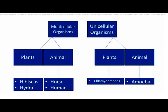For unicellular organisms, an example of a unicellular plant is Chlamydomonas. For unicellular animals, we can take Amoeba and Paramecium as prominent examples.